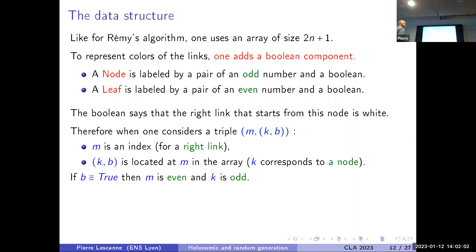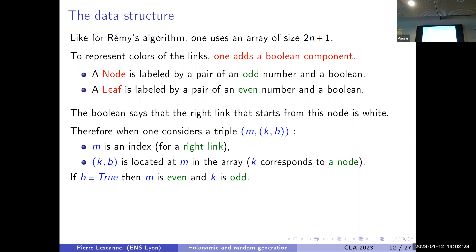A node is labeled by a pair of an odd number and a boolean, and a leaf is labeled by a pair of an even number and a boolean — like Rémy's algorithm except that you add a boolean. The boolean says that the right link starting from this node is white. If you consider right links it means you should have a boolean only for internal nodes, but that would make too complex a data structure without making the algorithm really more efficient.